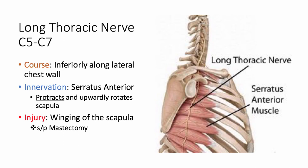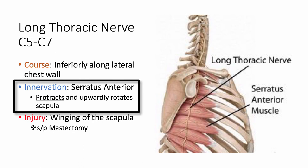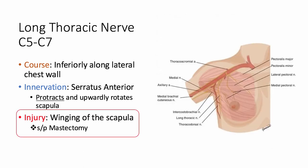Let's begin our discussion of the long thoracic nerve. Unlike the other nerves, this is not a terminal branch of the brachial plexus. It derives directly from the C5 to C7 nerve roots exiting from the spinal cord and travels inferiorly along the lateral chest wall going on to innervate the serratus anterior muscle. Recall, the primary role of the serratus anterior is protracting and upwardly rotating the scapula. The superficial course of the nerve leaves it very susceptible to injury from trauma or stretch.